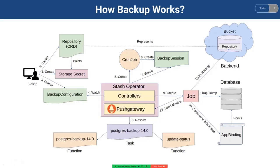Stash pipes the output of the dump command to the uploading process. Hence, the backup job does not require a large volume to hold the entire output. Finally, when the backup is complete, the job sends Prometheus metrics to the Prometheus server running in the Stash operator port. It also updates the backup session and repository status to reflect the backup procedure.